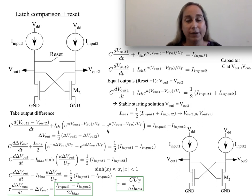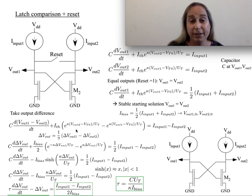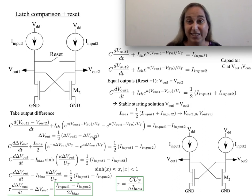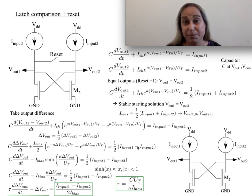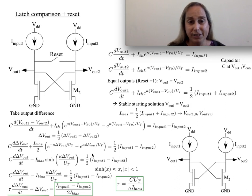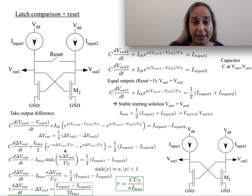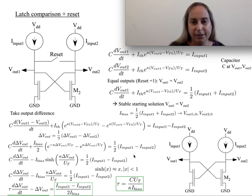Looking at half the difference of the outputs and noting how changes happen around the bias points, you end up with a bias current over two, because technically an extra factor of two comes in. This gives half the difference, which is a typical differential mode result. The difference over two is also known as a hyperbolic sinh, and it actually gives a minus sign because it's minus minus the plus side — so it's flipped. This is the full nonlinear dynamics of the structure.